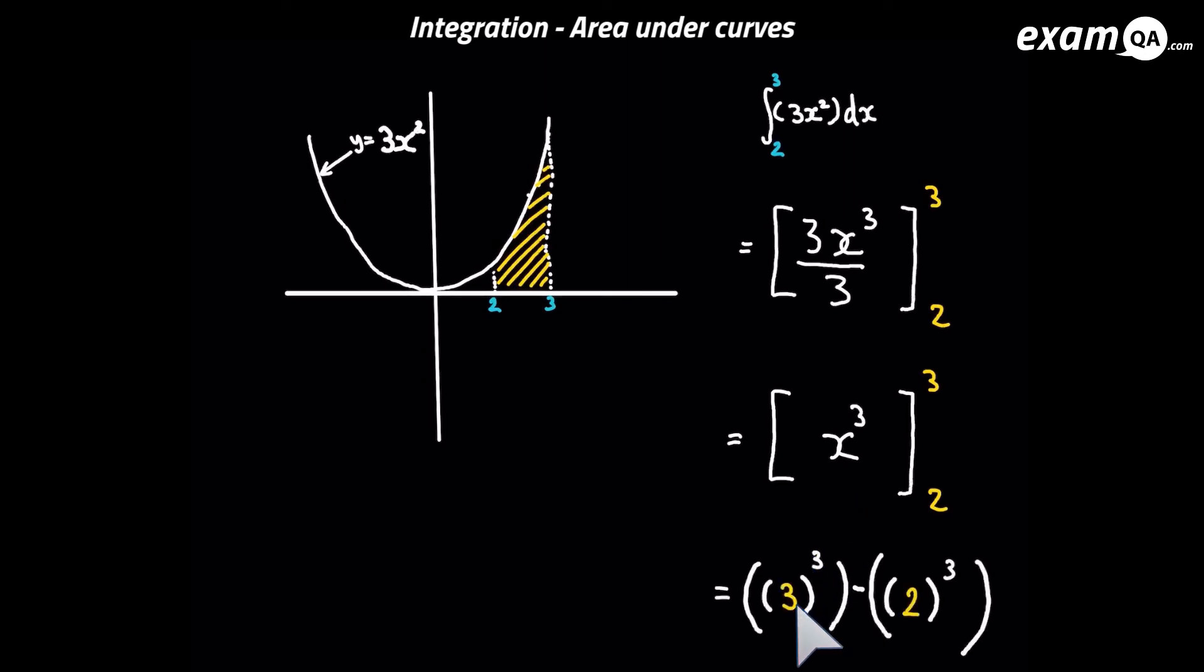Now we're going to throw in the limits. We put the upper limit 3 into the expression x cubed minus putting the lower limit 2 into the expression and we subtract them. You can just put this straight into your calculator now. That gives us 19. I've written unit squared because we've got ourselves an area.